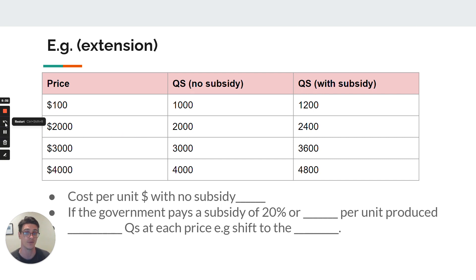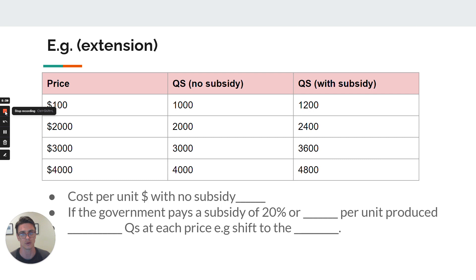So that's direct provision and subsidies. Remember, they're designed to shift the supply curve outward and produce more of a particular good or service. They're usually used for public goods or positive externalities to correct the under-allocation. Bye for now.